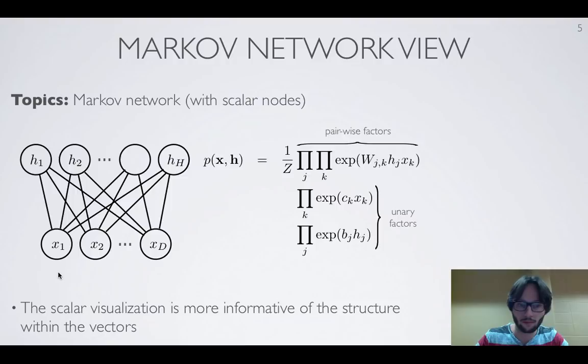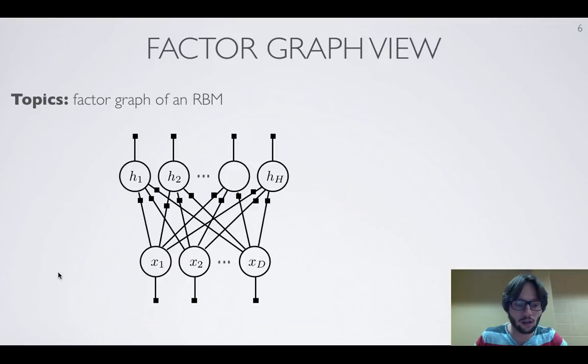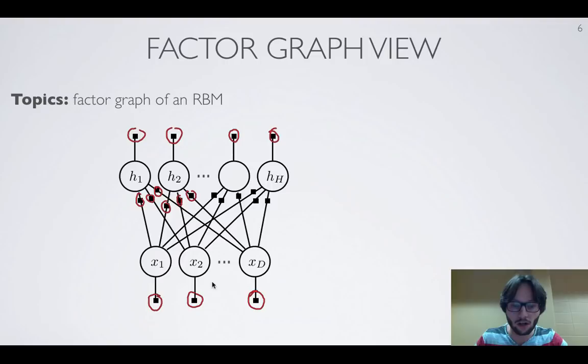Looking at the factor graph visualization of the restricted Boltzmann machine, we get a factor for each pairwise connection between elements in the visible and hidden units, plus unary factors for each scalar variable. The factor graph makes it explicit that we have unary factors for both h and x. That's the definition of the restricted Boltzmann machine, and in the subsequent video we'll see how to do inference in the model and how to train it on data.